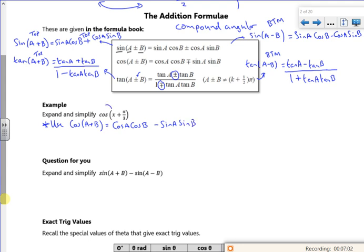So A is x and B is pi by 3. So my cos of x plus pi by 3 is actually cos x cos pi by 3 minus sin x sin pi by 3.